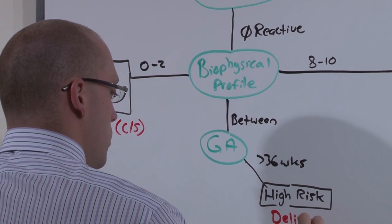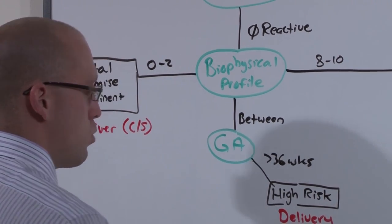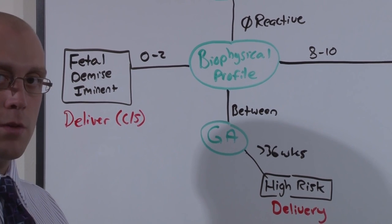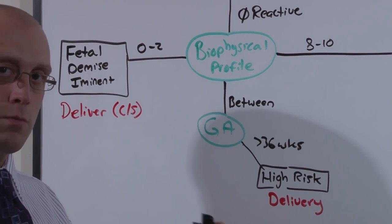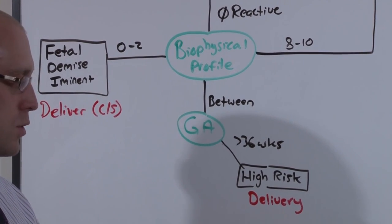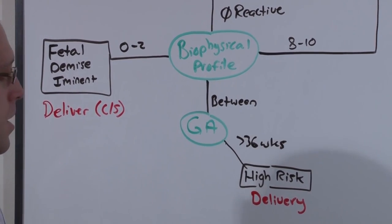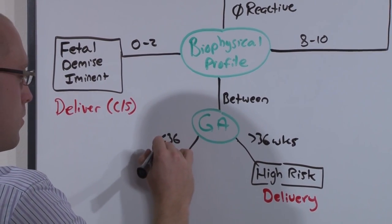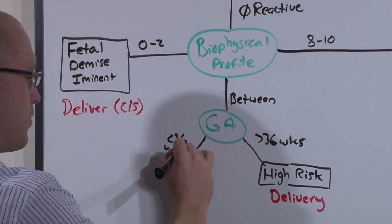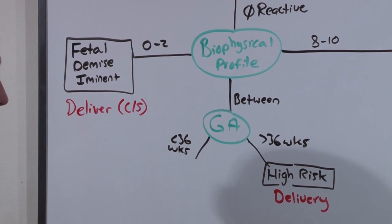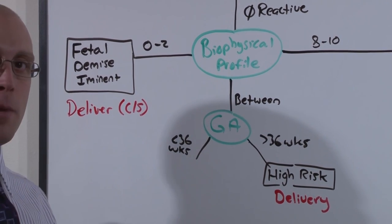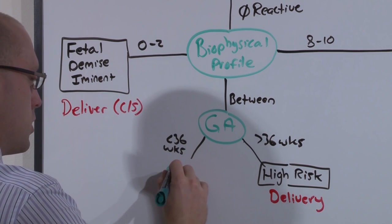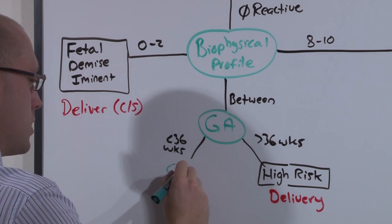This baby simply gets delivered. The delivery can be induced by Pitocin — baby is not very sick, so just induce Pitocin and mom can have vaginal delivery or C-section. But if it's not term, you have to decide: will there be benefit staying in the oven? If so, you do the contraction stress test.